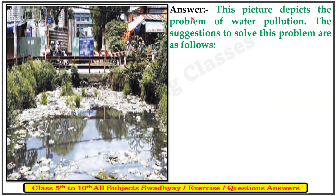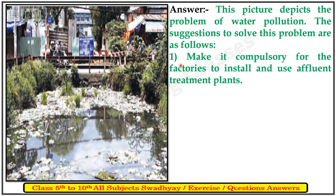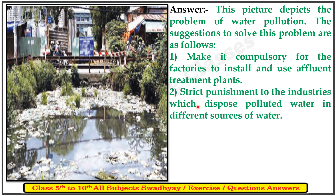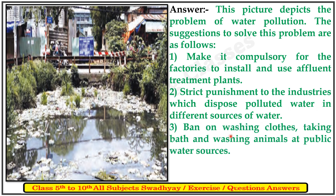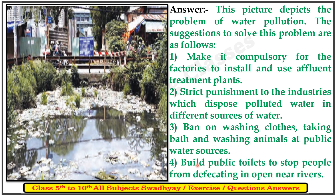Next picture: this depicts the problem of water pollution. The suggestions to solve this problem are: first, make it compulsory for factories to install and use effluent treatment plants; second, strict punishment for industries which dispose polluted water into different sources of water; third, ban on washing clothes, bathing and washing animals at public water resources; fourth, build public toilets to stop people from defecating in the open near rivers.